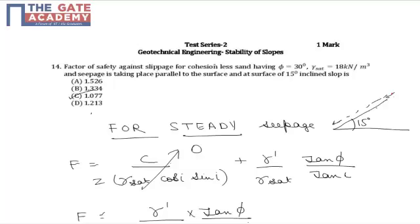Now for the case of steady seepage, factor of safety is given as: c upon z times gamma sat upon cos i sin i, plus gamma dash upon gamma sat (where gamma dash is submerged unit weight), times tan phi upon tan i.